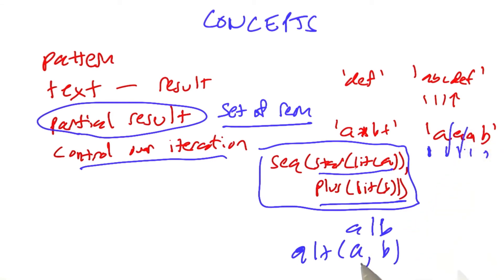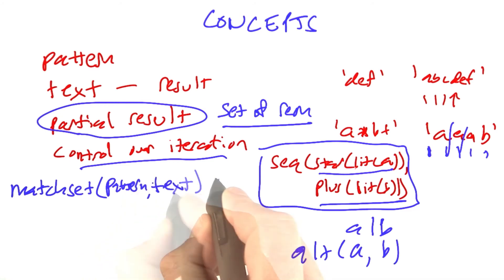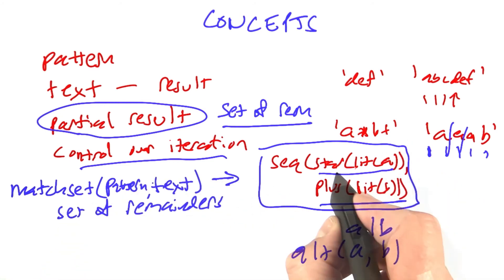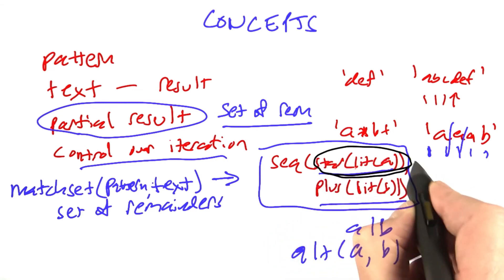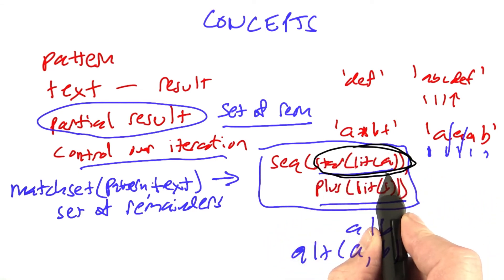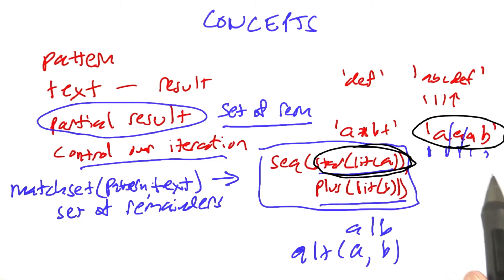And so what I'm going to do is define an auxiliary function called match set, and it takes a pattern and a text, and it returns this set of remainders. And so when given just this pattern here as the input, star of literal a, and this text as the text, then the remainder would be a set consisting of three a's and a b.